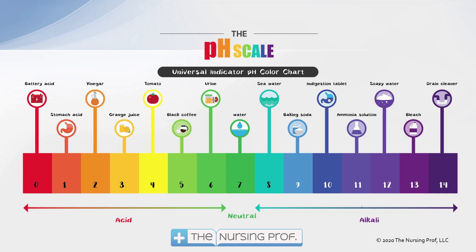In the body, we want to try to keep that pH right around 7.4. You see it's a little bit higher than water, so our body is not just made up of water. You have to have some tissues in there, you have to have blood cells and plasma and so on, and that gives it that extra little boost up to 7.4.